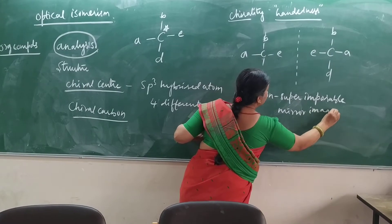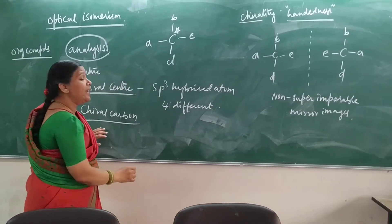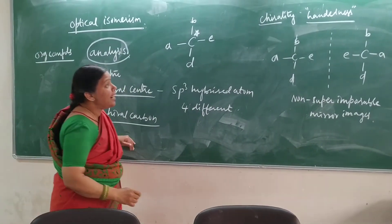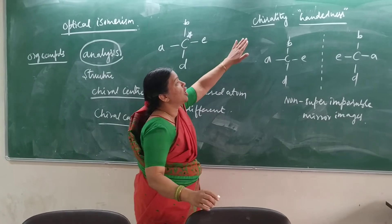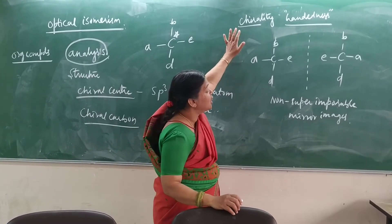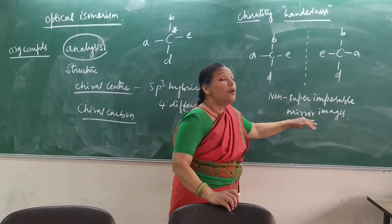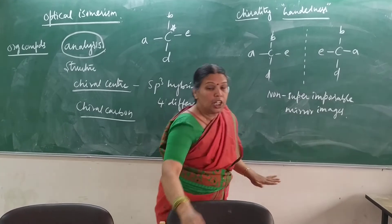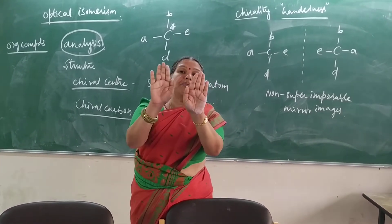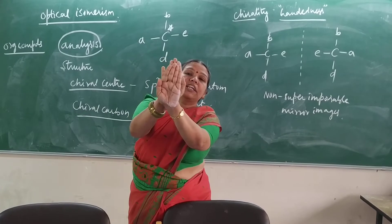Non-superimposable mirror images. The first condition is that the molecules have chiral carbon, and they should have chirality. Chirality is nothing but non-superimposable mirror images.